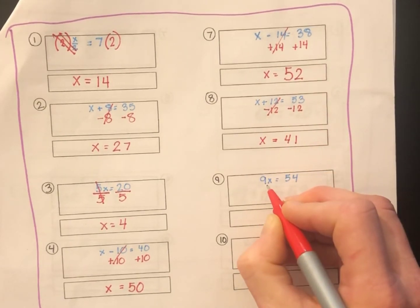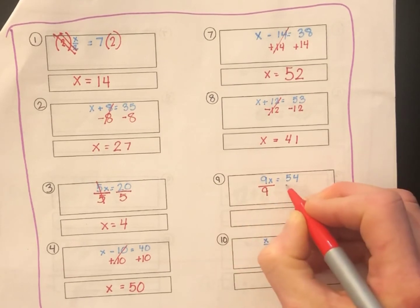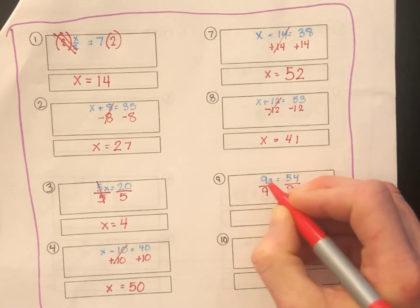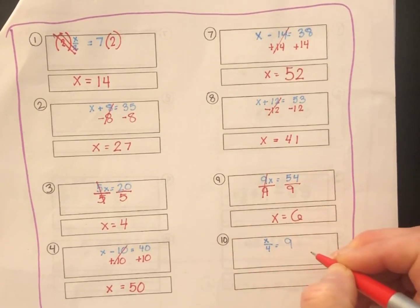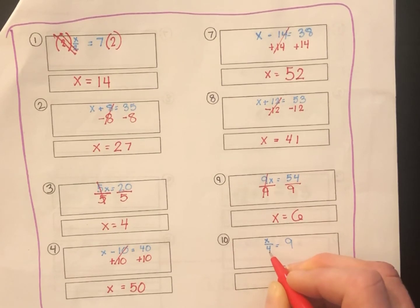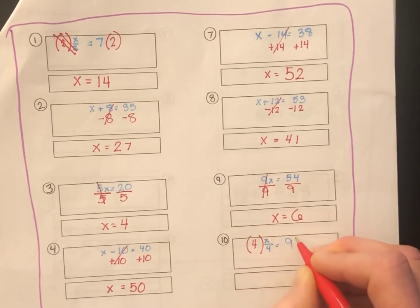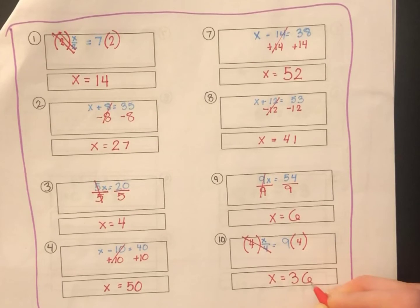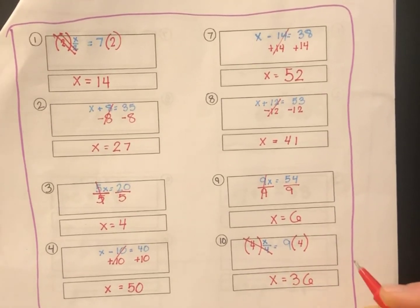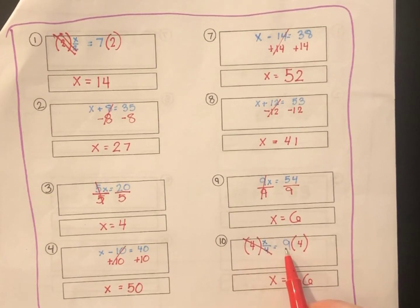Number 9, I've got multiplication again. 9 times x equals 54. Divide both sides by 9, and I end up with x equals 54 divided by 9, which is 6. x divided by 4 equals 9. Again, we want to get the x by itself, and right now it's being divided by 4. To get rid of divided by 4, we'll multiply by 4. Both sides, we end up with x equals 9 times 4, which is 36. And if I check my answer, 36 divided by 4 is 9.